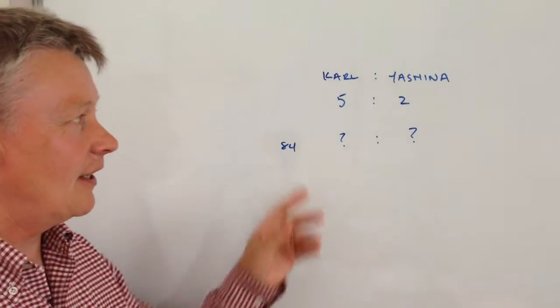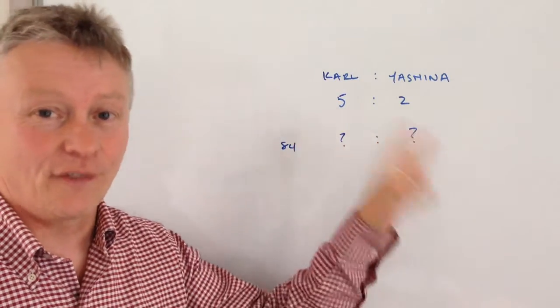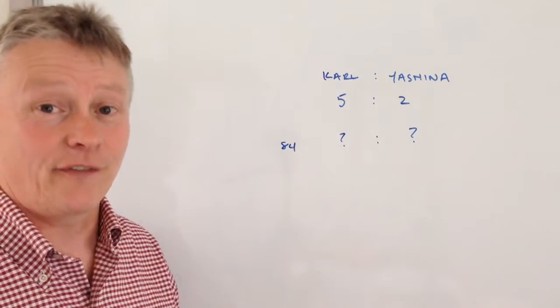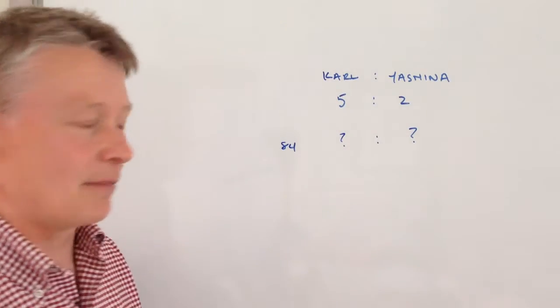So we've got Carl and Yasmina and the ratio of their ages is five to two and the question says their combined ages is 84 therefore how old is Carl and how old is Yasmina?